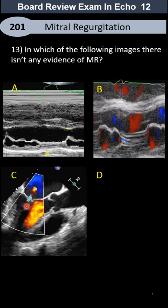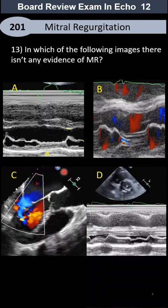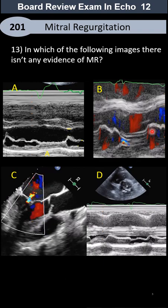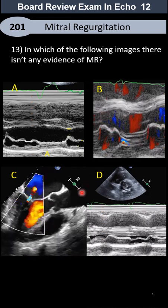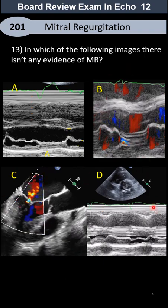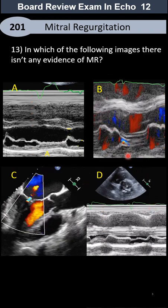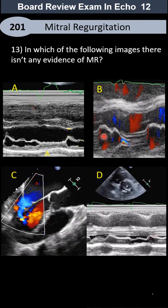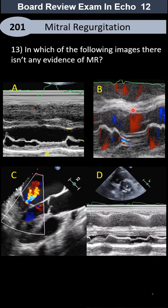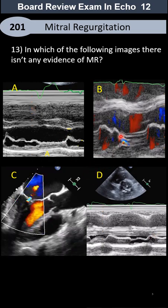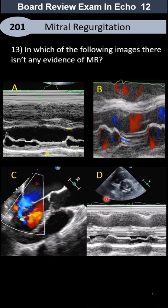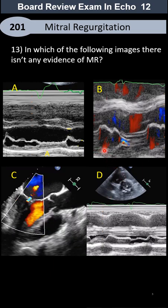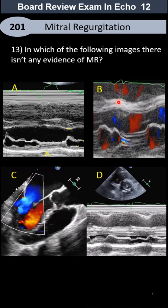Here we have four different studies — 2D and M-mode, color M-mode and M-mode — these two. So which of them doesn't have any evidence of mitral regurgitation?